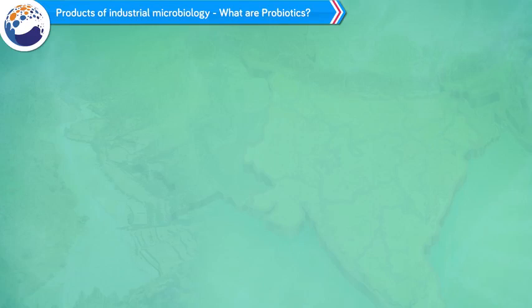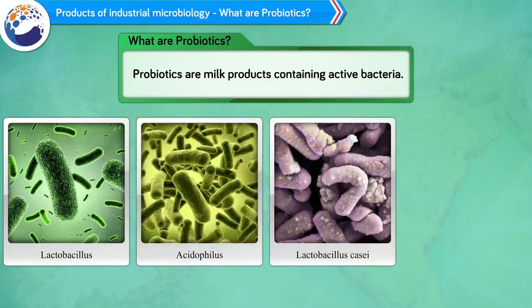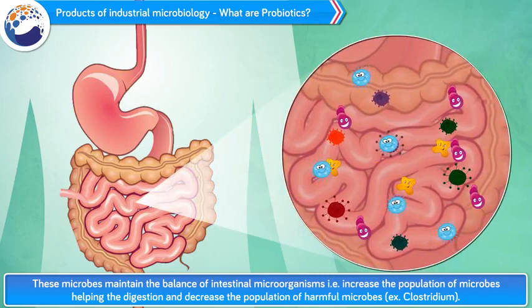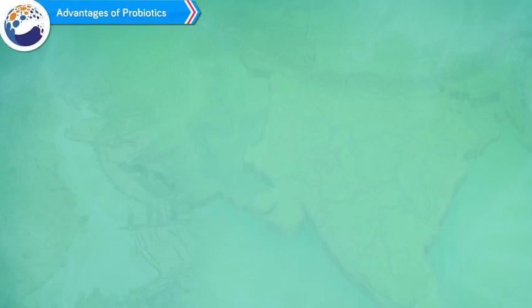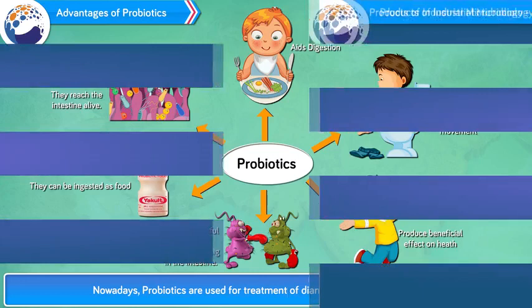B. Probiotics. What are probiotics? Probiotics are milk products containing active bacteria, for example Lactobacillus acidophilus, Lactobacillus casei, Bifidobacterium bifidum, etc. Role: These microbes maintain the balance of intestinal microorganisms, i.e., increase the population of microbes helping digestion and decrease the population of harmful microbes such as Clostridium. Advantages of probiotics: 1. Useful microbes which become inactive due to antibiotics — probiotics make them active again. 2. Nowadays, probiotics are used for treatment of diarrhea and poultry treatment.